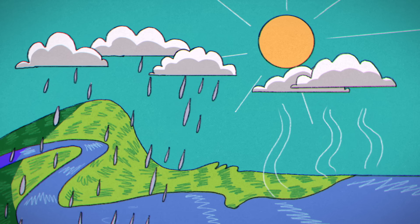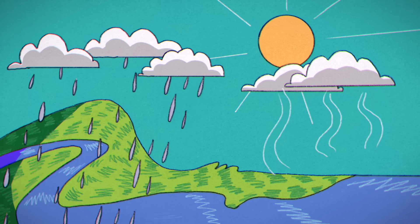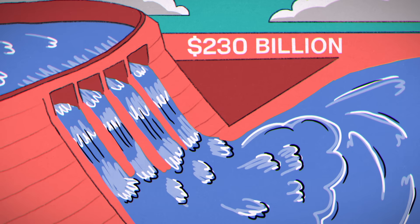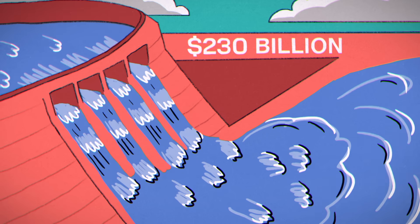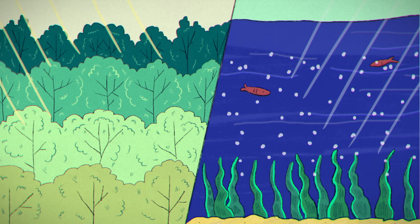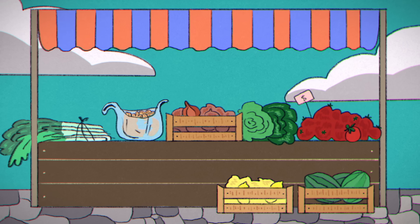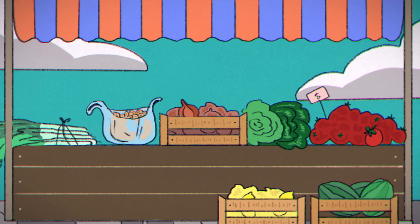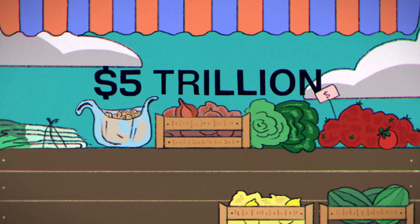And hydropower, generated by the sun moving the world's water, was worth around 230 billion dollars. Sunshine also grows all kinds of food, and in 2022, the global agriculture market reached approximately 5 trillion dollars.